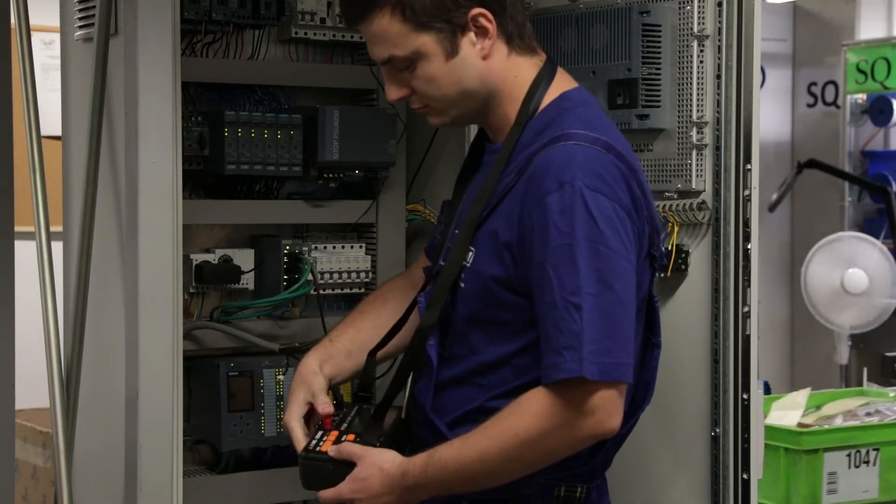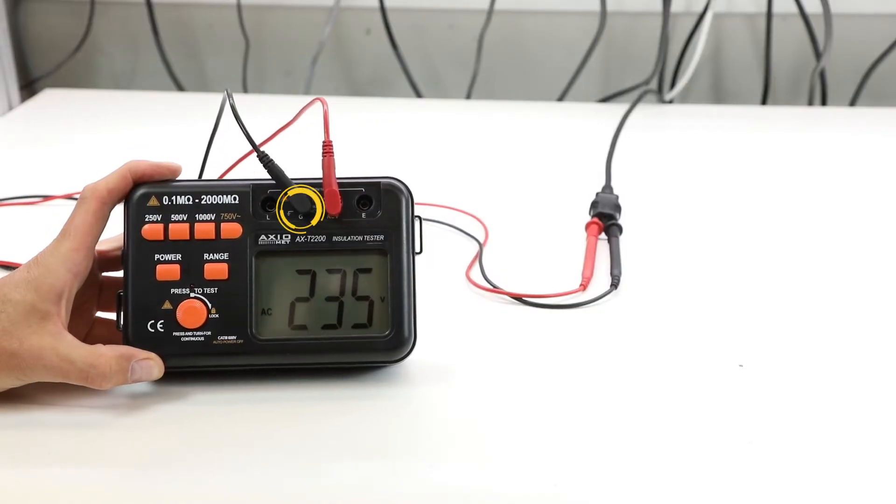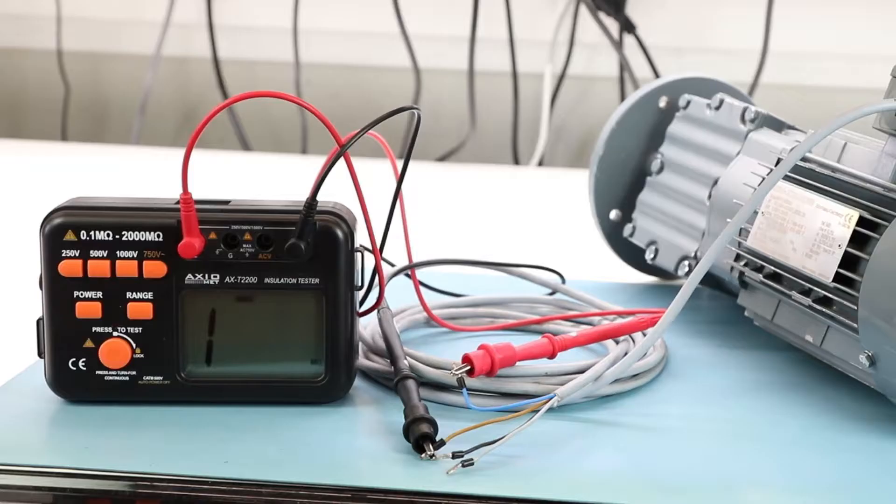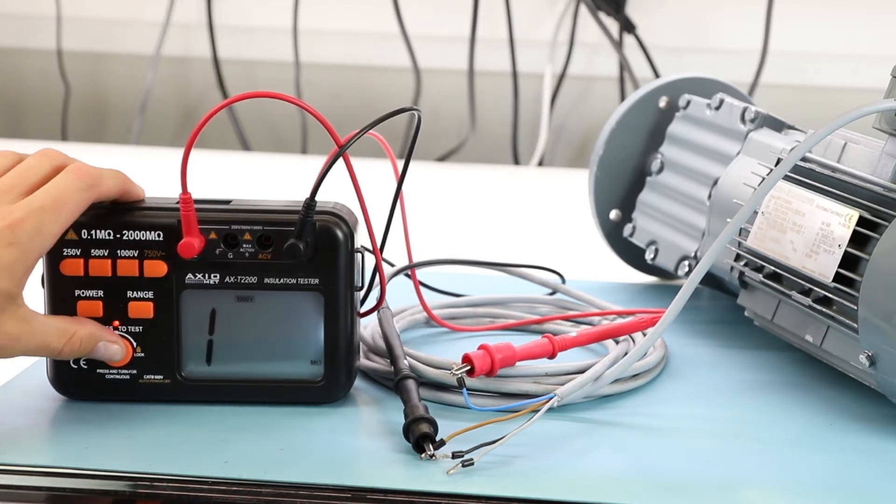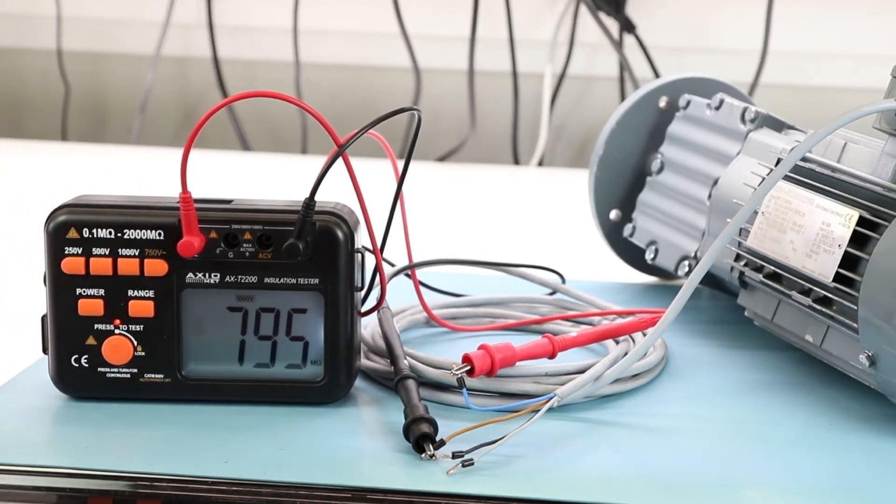While measuring a wire, connect the G socket to a safety loop. Press the measurement button to initiate the measurement and turn it right to block.